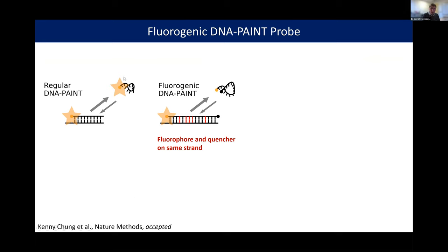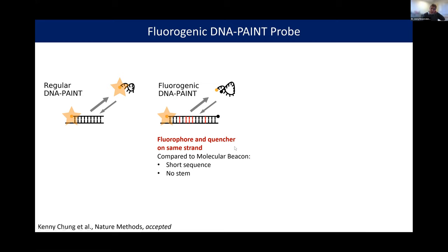We have replaced the regular DNA-PAINT probe with one that has a fluorophore on one end and a quencher on the other. When the molecule diffuses around, the quencher and fluorophore get close enough that the quencher quenches the fluorescence, probably through a mix of contact quenching and Förster resonance energy transfer. But when the molecule binds to the docking strand, it is stretched out, and the quencher is far enough away that the fluorophore can emit fluorescence in an unhindered manner. This might remind you of molecular beacons, but our sequence is much shorter, giving us transient binding events of only a few tens of milliseconds.